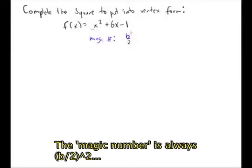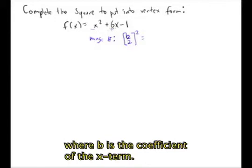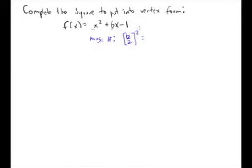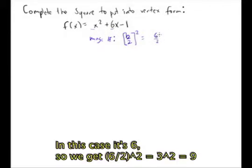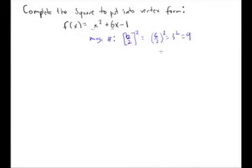The magic number is always b over 2 squared, where b is the coefficient of the x term. So in this case it's 6, so this is 6 over 2 squared, which is 3 squared, which is 9.